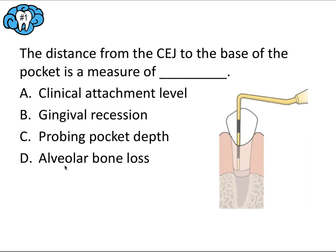Thinking about clinical attachment level and gingival recession — from our first video on the periodontal exam: gingival recession is measured as the distance from the CEJ to the gingival margin. Probing pocket depth is measured from the gingival margin to the base of the pocket. Alveolar bone loss is the distance from the original crest of bone, usually one to two millimeters below the CEJ, to the current level of the crest. So CEJ to the base of the pocket is clinical attachment loss — answer A.